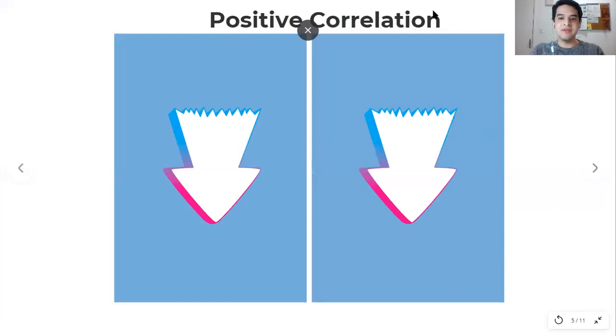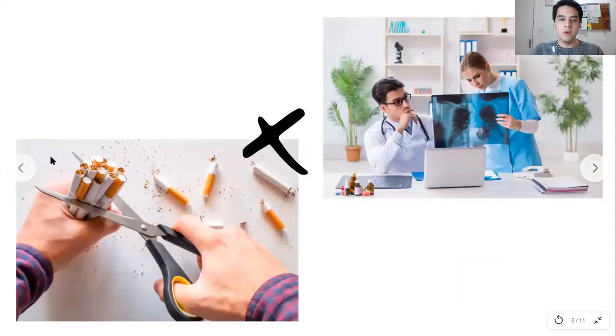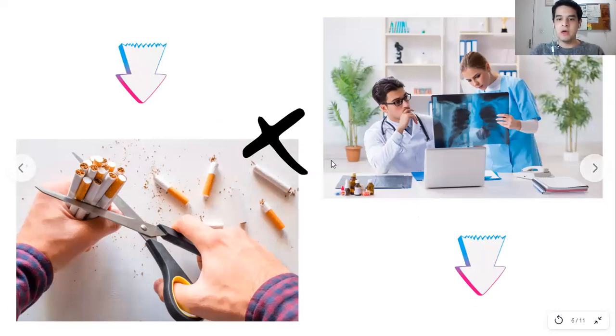In a positive correlation, we can also have one variable going down and the other also going down. One example is that reducing smoking is correlated with a reduced incidence of lung cancer.